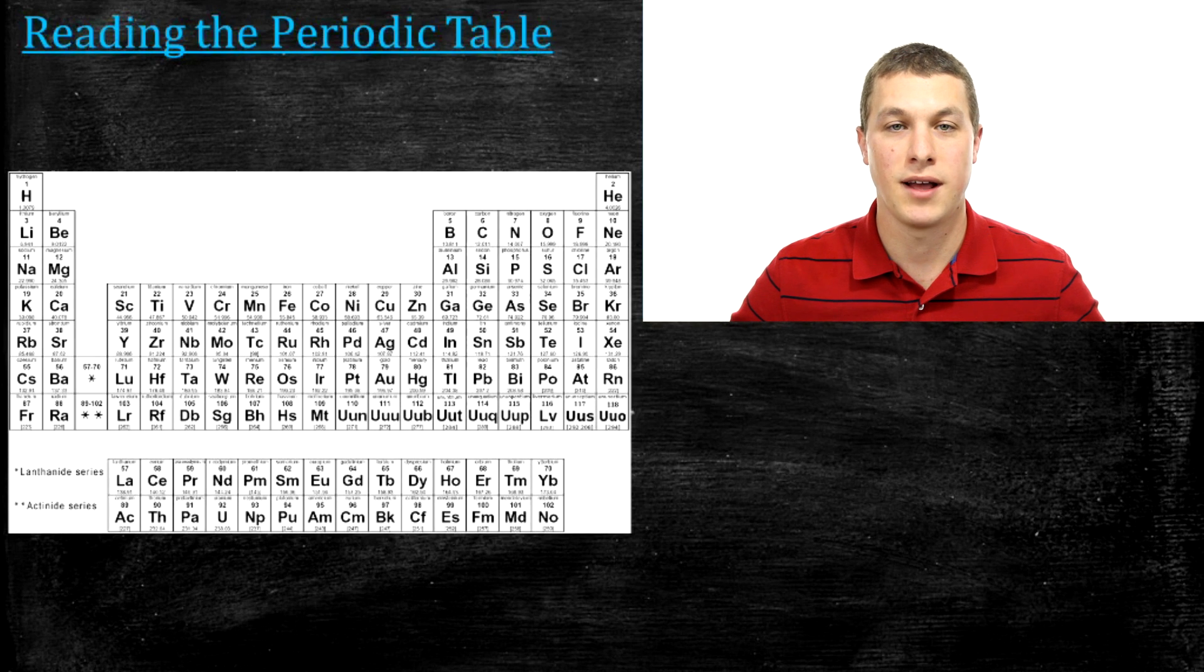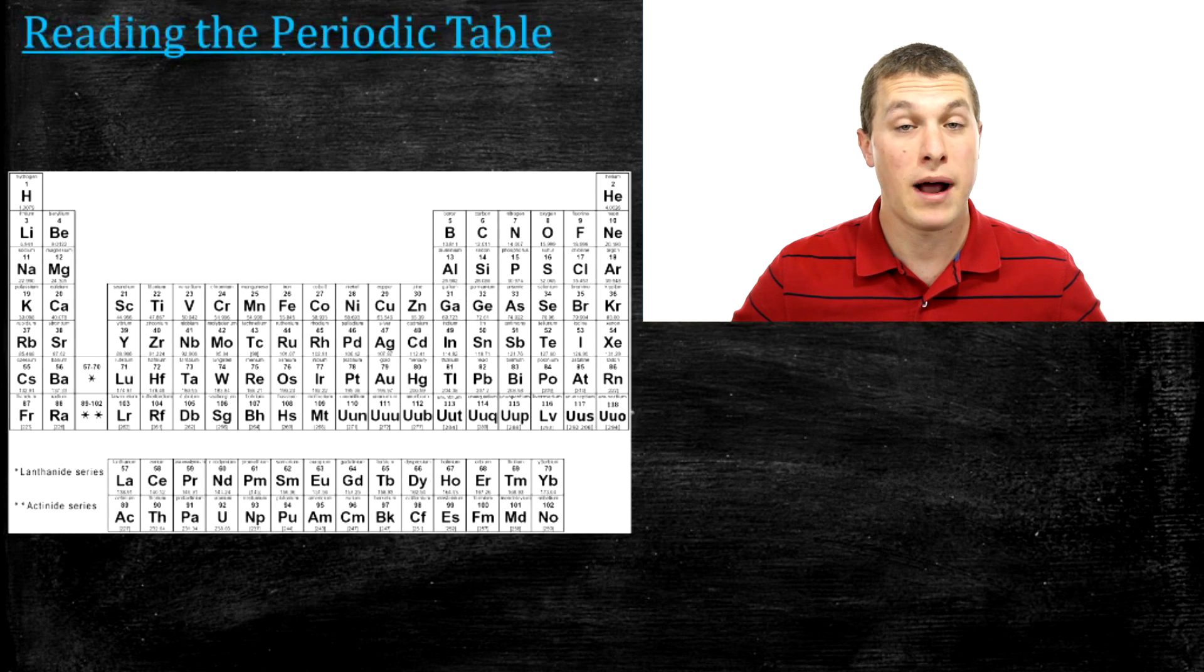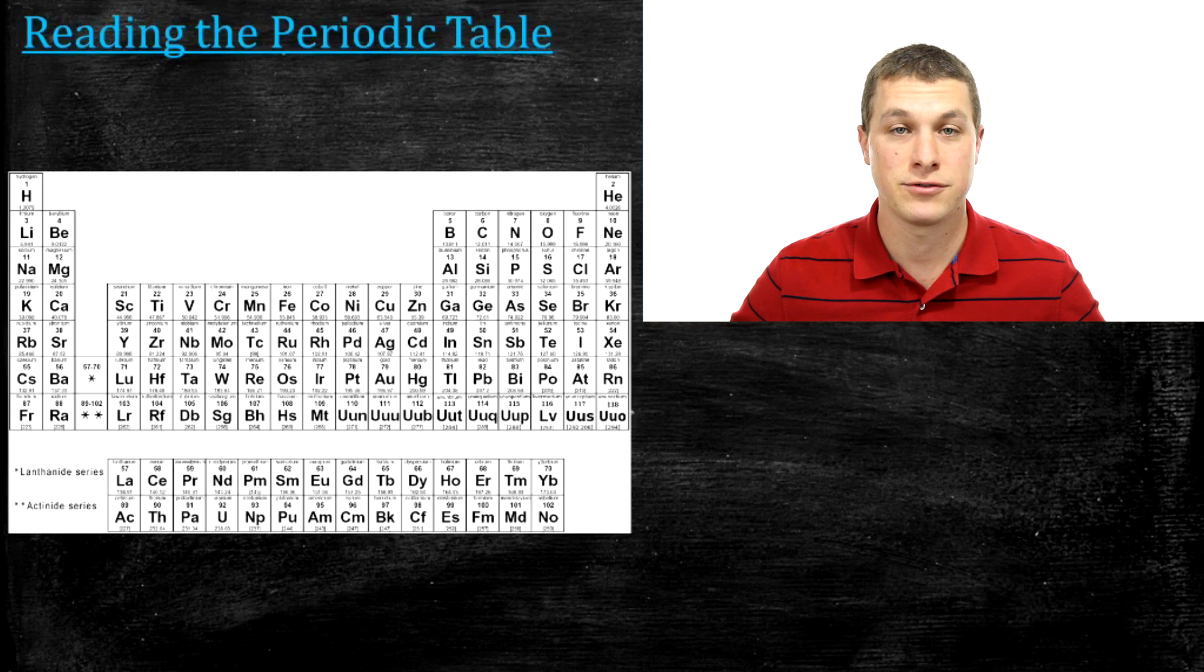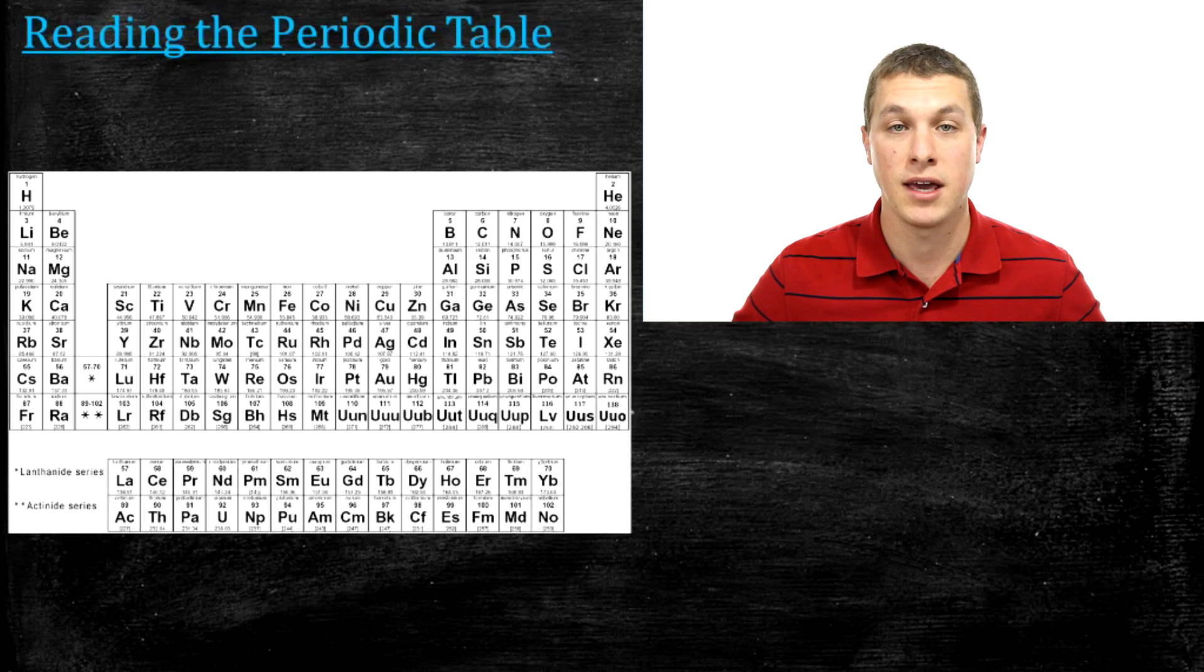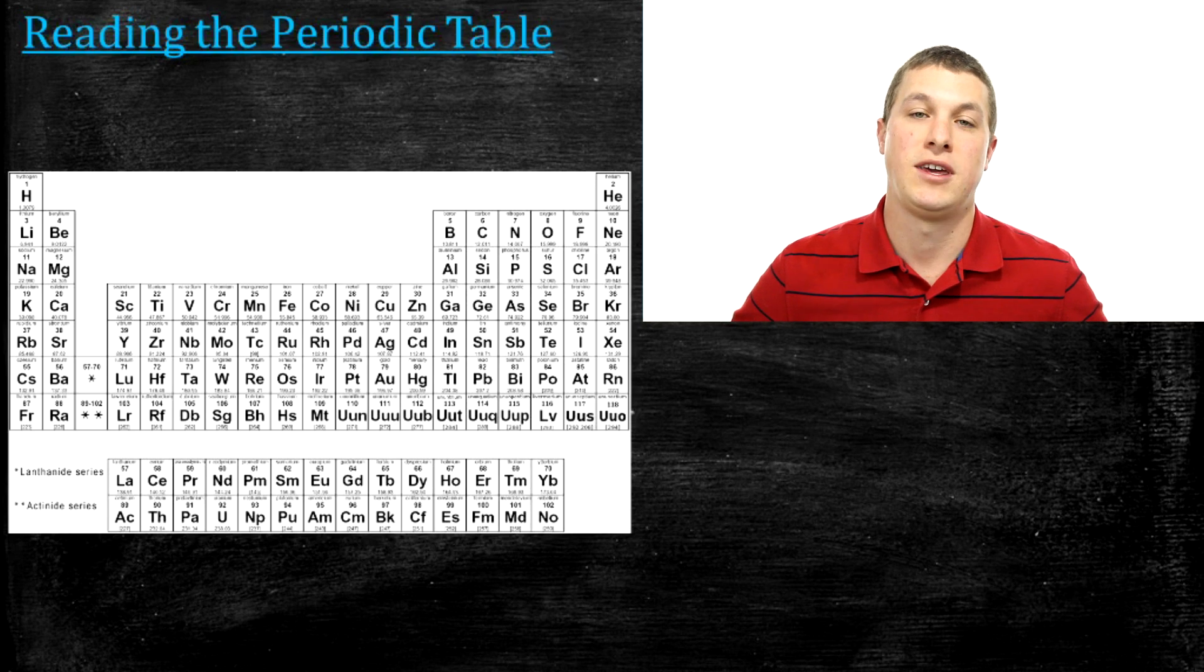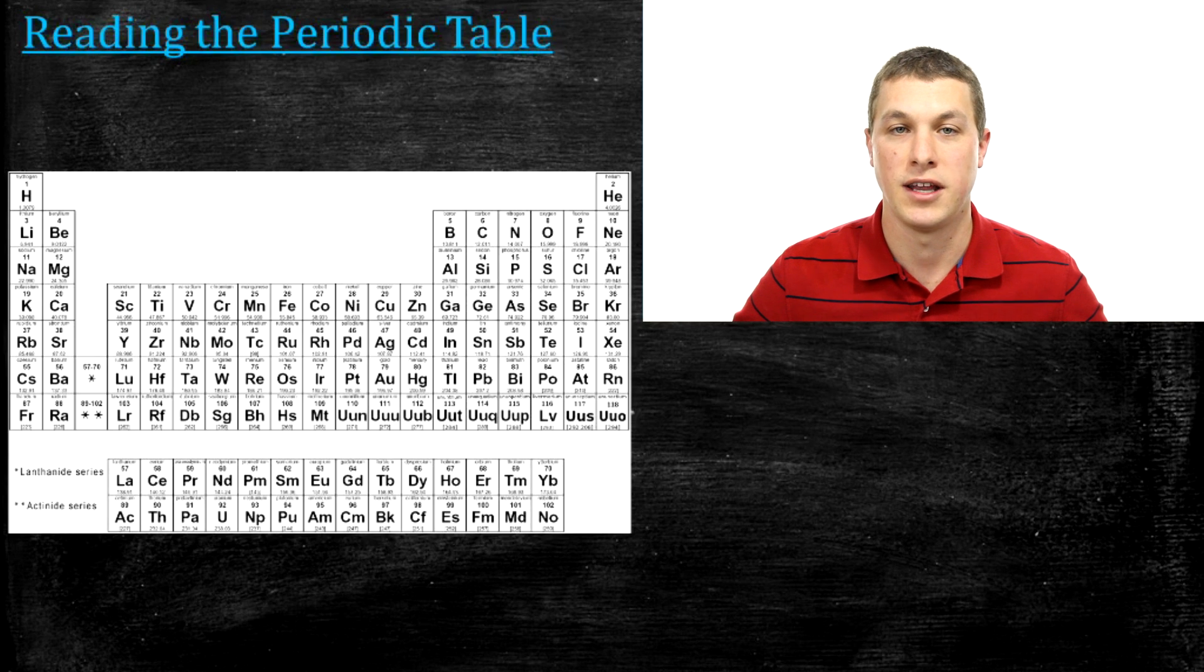In this episode of Real Chemistry, we're going to talk about the periodic table. You've probably seen this chart in the chemistry classroom or in your chemistry textbook, and basically it's just a list, a catalog, of all the elements that make up our world. So everything around you is made of elements, and we can catalog these elements on the periodic table.